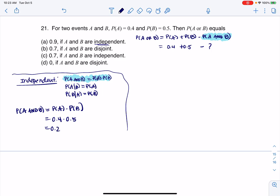So let's see what would happen here. So if they were independent, this would turn into 0.4 plus 0.5 minus 0.2, and that would get me 0.7.